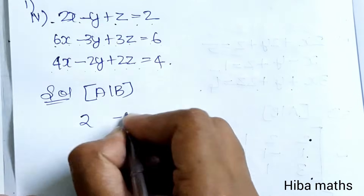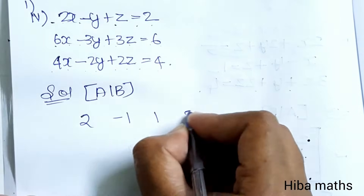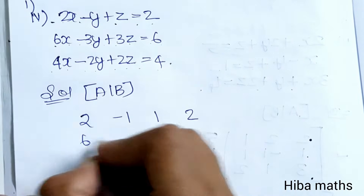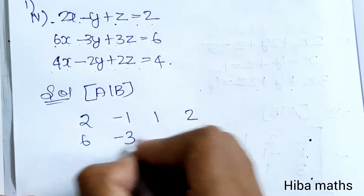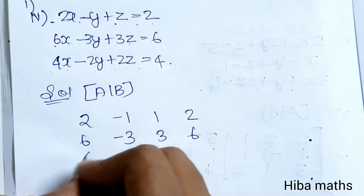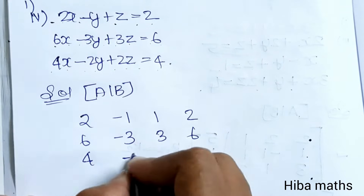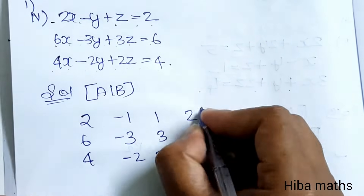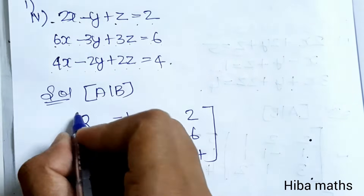Writing the augmented matrix: the first row is [2, -1, 1 | 2], the second row is [6, -3, 3 | 6], and the third row is [4, -2, 2 | 4].